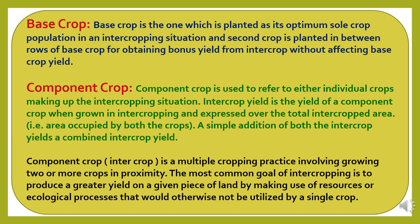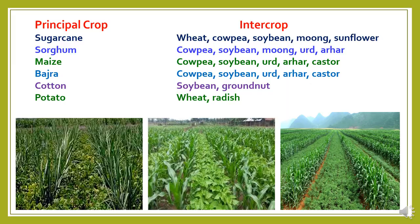A simple addition of both intercrop yields gives a combined intercrop yield. Intercrop is a multiple cropping practice involving growing of two or more crops in proximity. The most common goal of intercropping is to produce a greater yield on a given piece of land by making use of resources or ecological processes that would otherwise not be utilized by a single crop. In intercropping, different crops with different growth habits are grown to obtain additional yields.